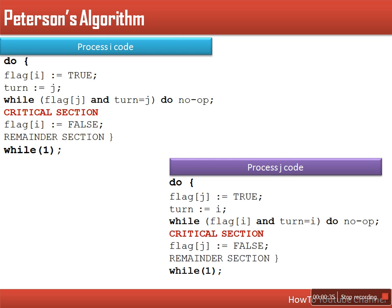Every process executes this code. If we look here, this is the code for process i. The flag[i] variable indicates that process i wants to enter its critical section — so we can say this is an intention variable. It is a boolean variable so it can have value true or false. Another variable, turn, is the main variable which will decide which process will actually enter its critical section.